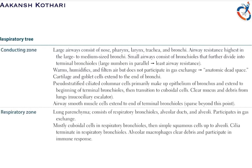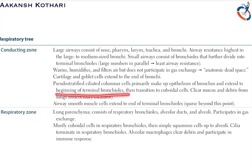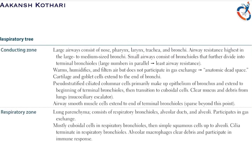The cartilage and goblet cells present in the conducting zone extend till the end of the bronchi. The pseudostratified ciliated columnar epithelial cells primarily make up the epithelium of the bronchus and extend to the beginning of the terminal bronchioles.